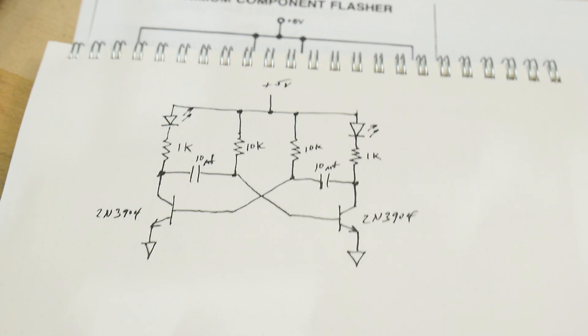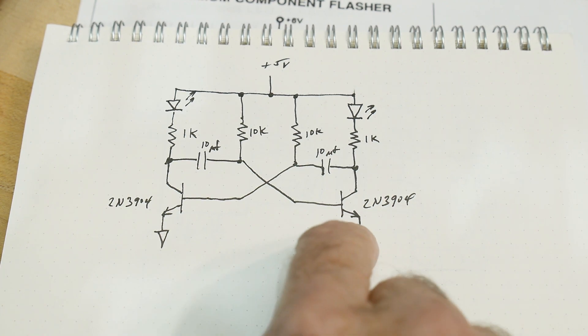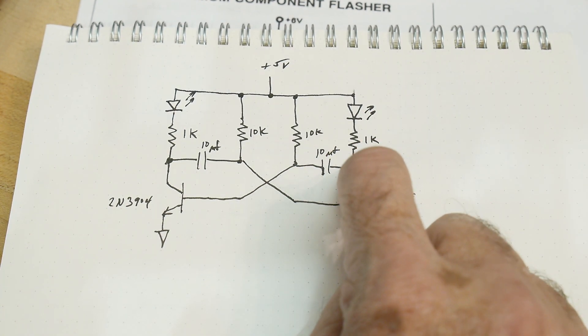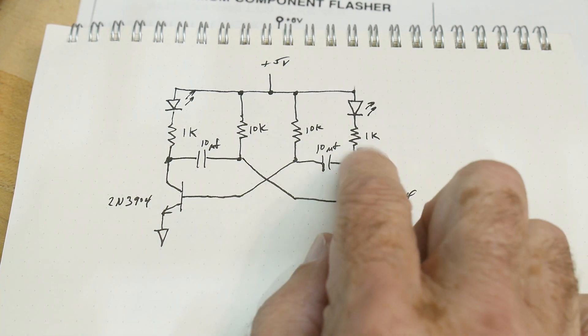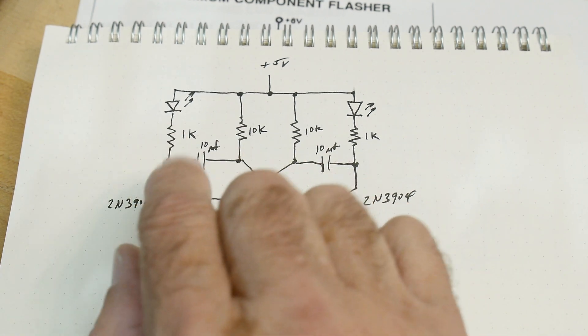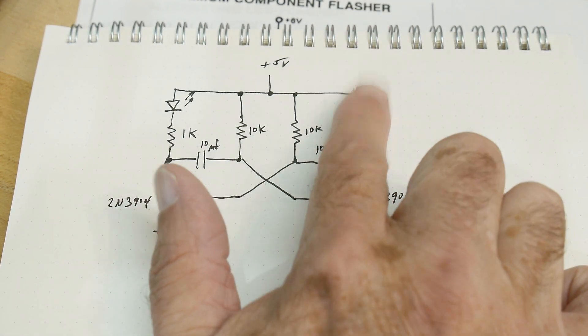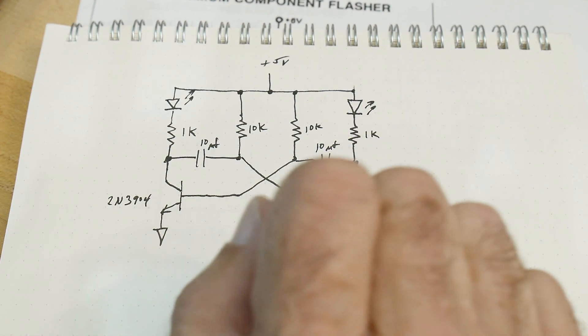So again, same transistors. Instead of a six volt lamp, which that old, really old circuit used, I'm going to be using an LED. And I might as well put an LED on the other side too. That one was just flashing one side. I'm going to be flashing both sides.